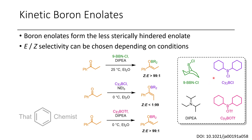Here are the structures of some of these reagents on the right. You might think some of these look rather exotic, but 9-BBN is very easy to prepare from commercially available materials, and even the 9-BBN chloride or bromide are commercially available, so they're accessible.